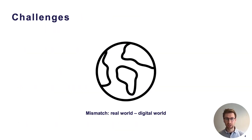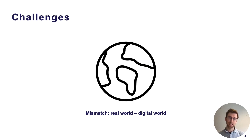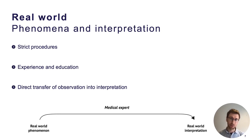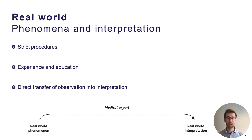Trying to summarize and bring all that together, we identified this need to better understand the relationship between real-world phenomena and the interpretation and eventual output provided by AI systems. This idea of interpreting the real world and providing an output aligns very well with the work of clinicians. Based on strict procedures, their experience and education, medical professionals know what to look for, which information to filter out, and as such have the ability to directly transfer an observation into an interpretation that allows humans to rapidly build an understanding of their environment, even when faced with unfamiliar phenomena.